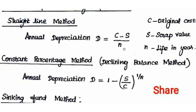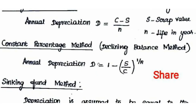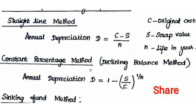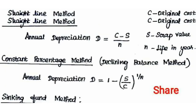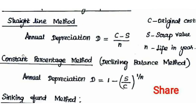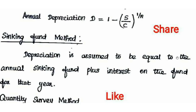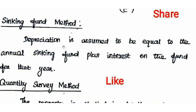Annual Depreciation in the Straight Line Method = (C − S) ÷ N, where C is original cost, S is scrap value, and N is life in years. For the Constant Percentage (Declining Balance) Method: Annual Depreciation = 1 − (S/C)^(1/N), using original cost, scrap value, and life in years. Sinking Fund Method: depreciation equals the annual sinking fund deposit.